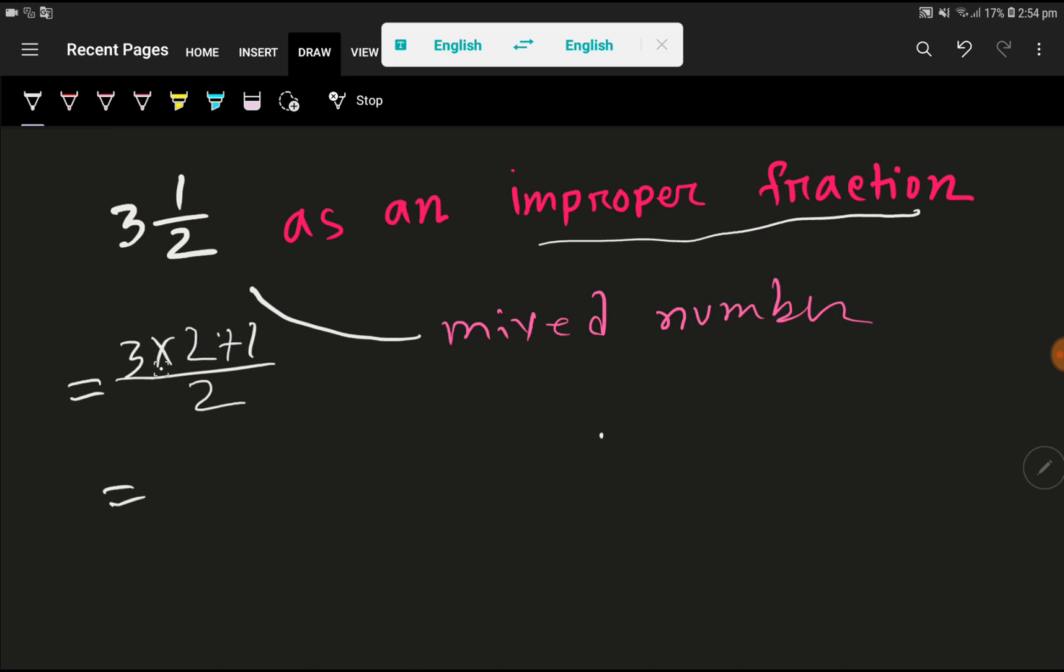Now we need to apply the calculation. 3 times 2, that gives me 6, plus 1, divided by 2. So 7 over 2.